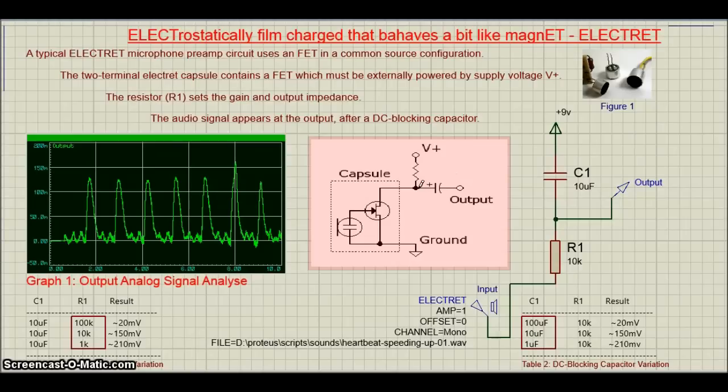which must be externally powered by supply voltage V+. The resistor R1 sets the gain and output impedance. The audio signal appears at the output after the DC blocking capacitor.